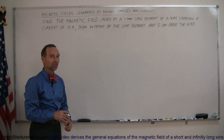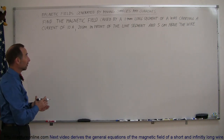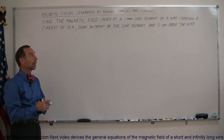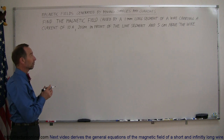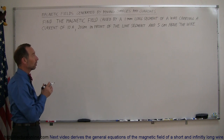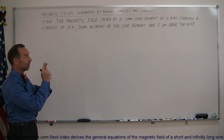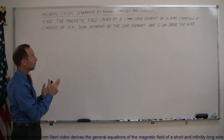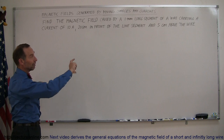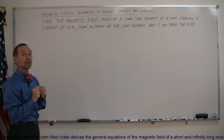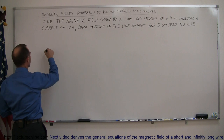Welcome to our lecture online. Here's the next segment in how we figure out the magnetic field caused by moving charges in line segments. In this particular case we're going to figure it out from a small line segment: how much magnetic field is caused by a single little piece of a wire carrying a current of 10 amps, 20 centimeters away from that line segment and 5 centimeters above the wire. Let's draw this out so we see what it looks like.